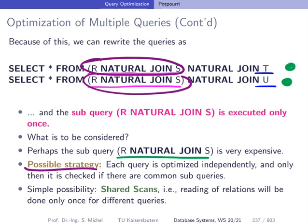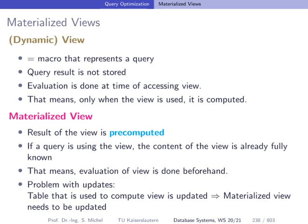The simplest possibility is the observation that we have relations needed in both queries, like R and S in this case, so we can benefit from so-called shared scans — reading the relation only once rather than multiple times. Another important topic for optimizing database system performance is materialized views.